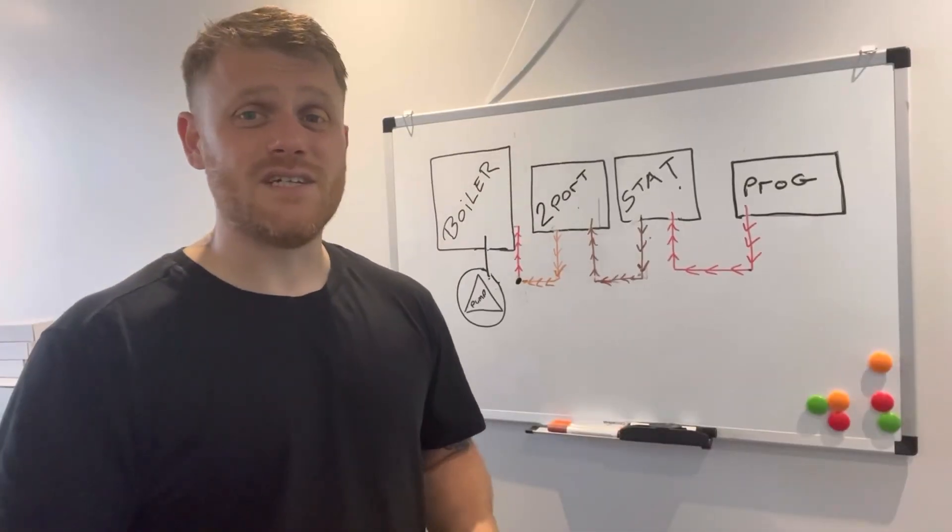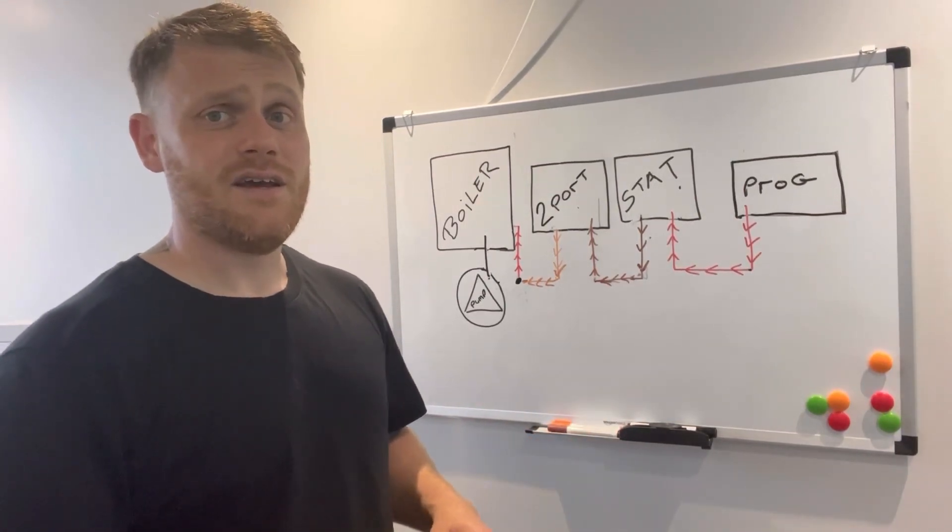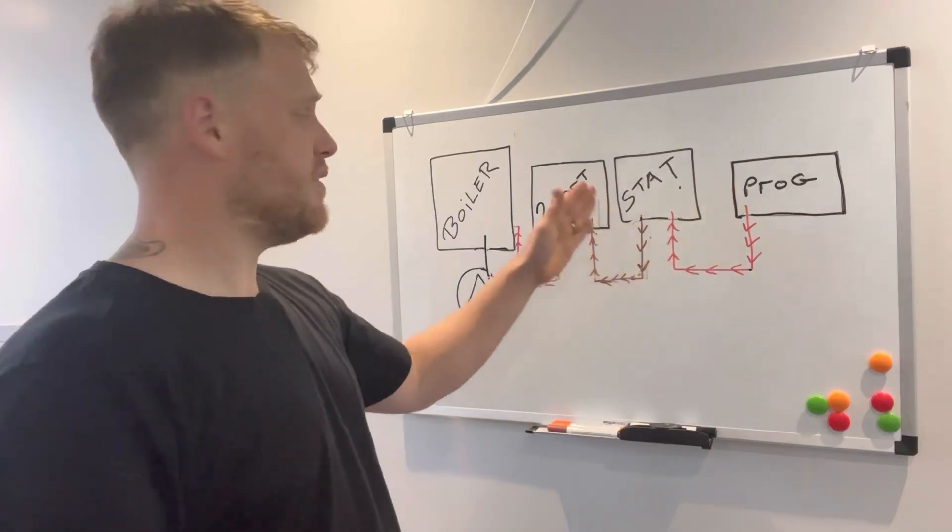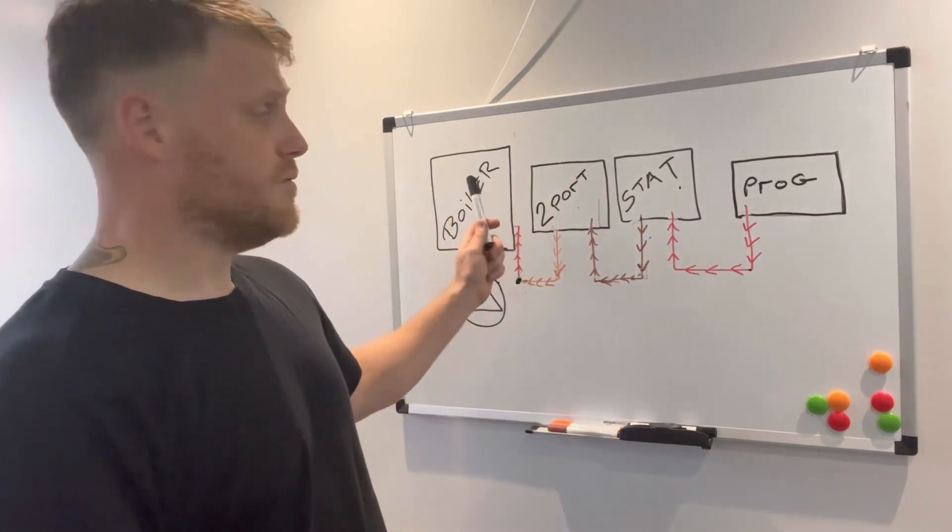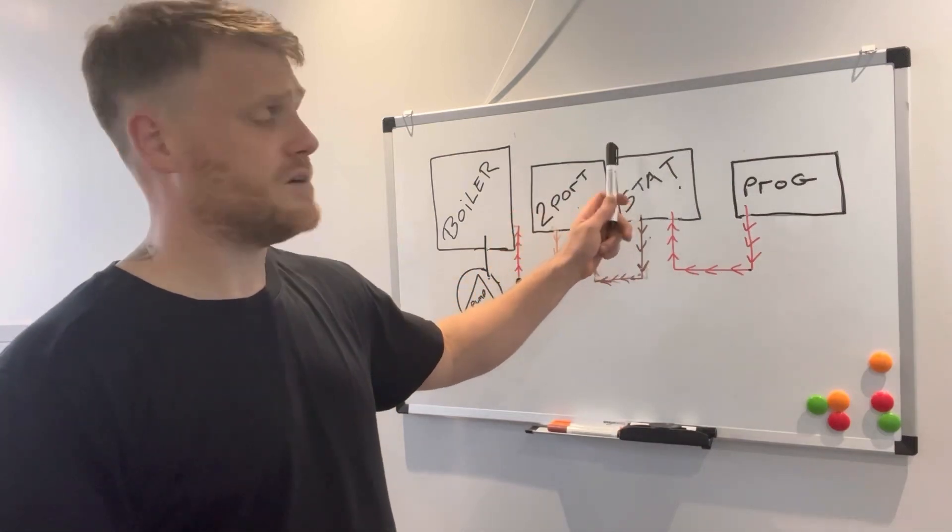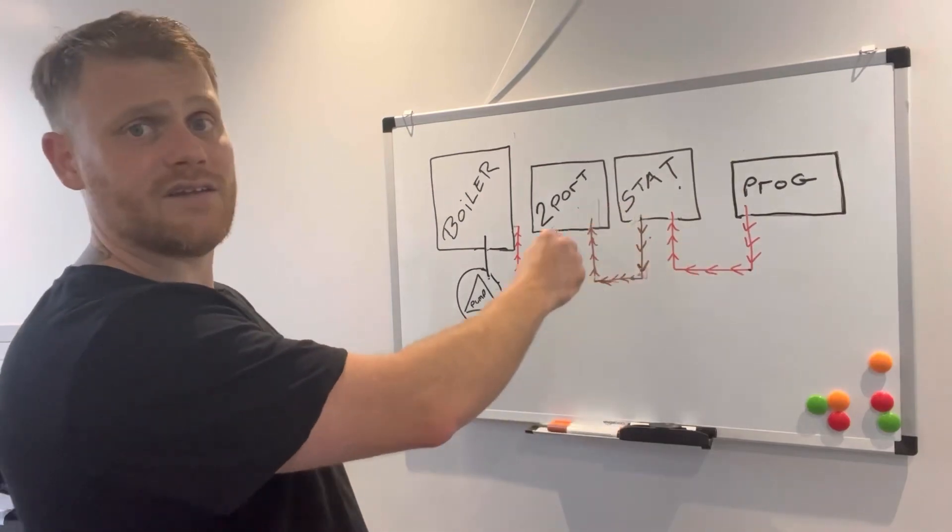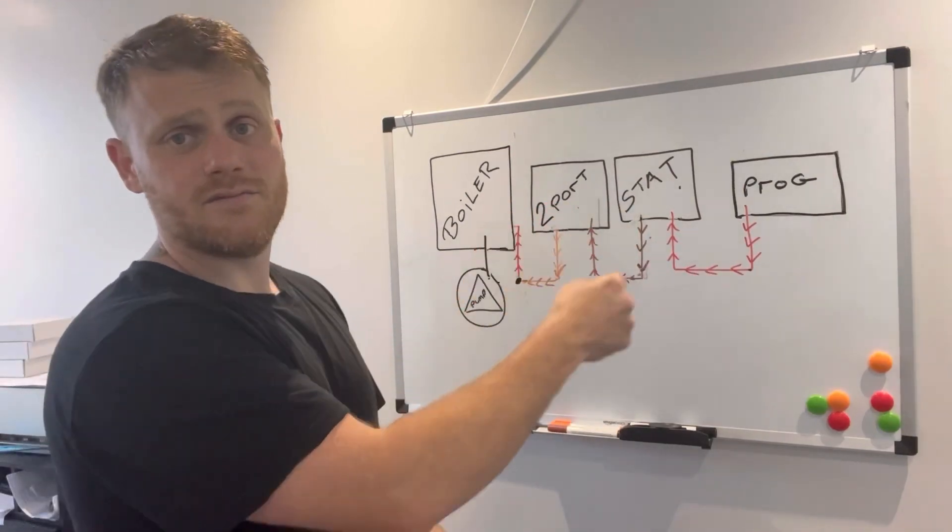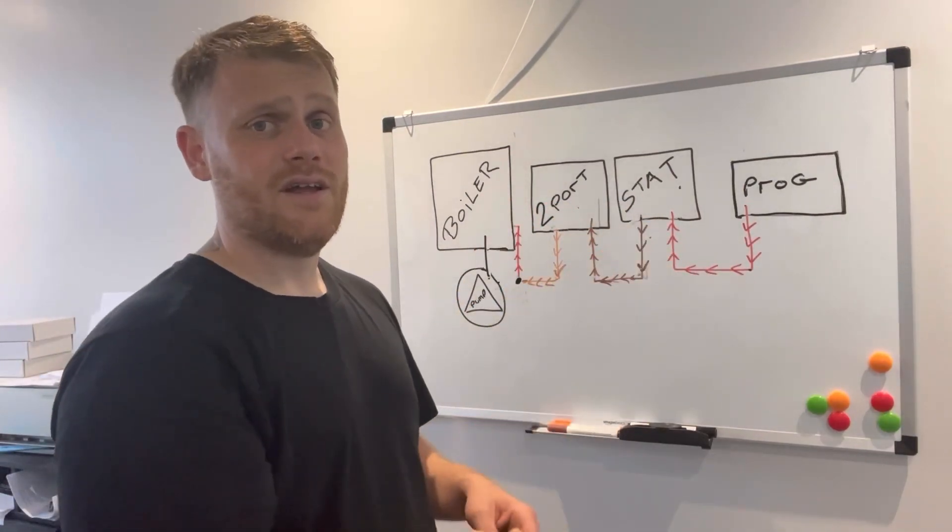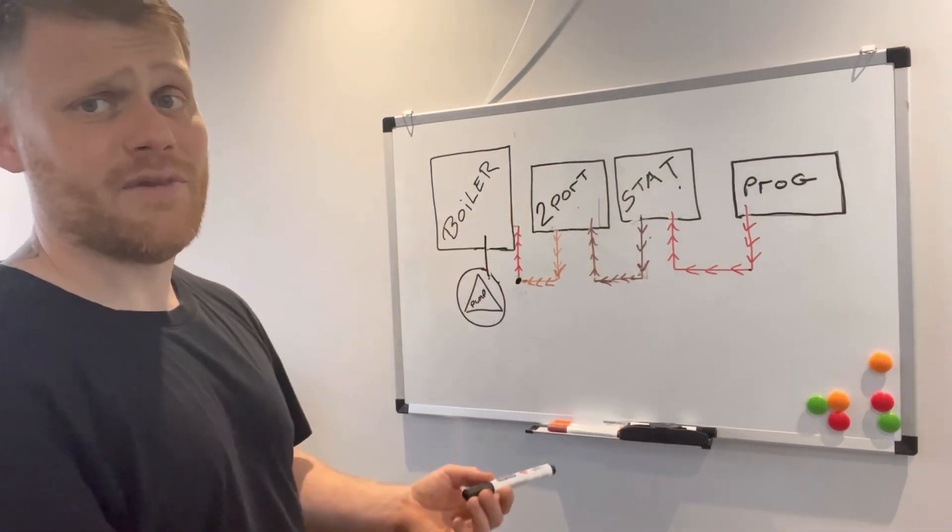When you break down electrics, it ain't that hard to understand really. In central heating systems it is just like a series of switches. For the boiler to work, the two-port's got to work. For the two-port to work, the stat's got to work, and so on and so forth. As you can see from the diagram, it's all linked and looped together.